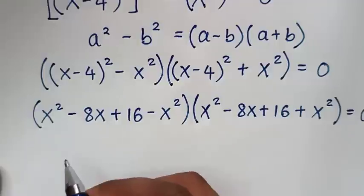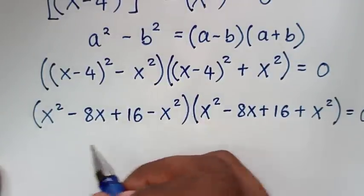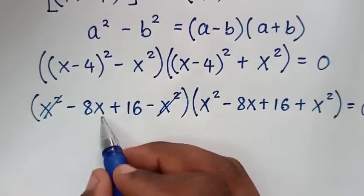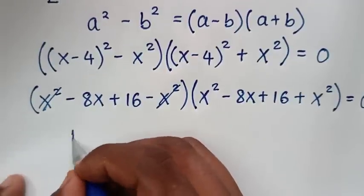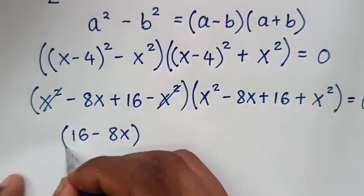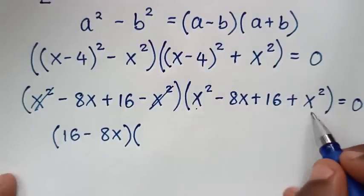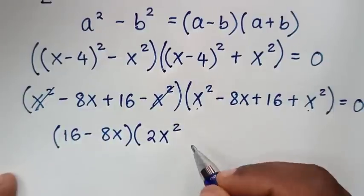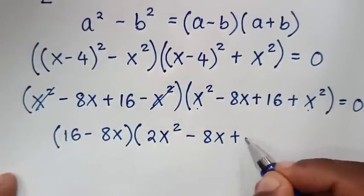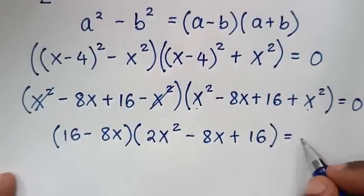This can be simplified: x² minus x² cancels to 0. So the first factor becomes 16 minus 8x, and the second factor becomes 2x² minus 8x plus 16, all equal to 0.